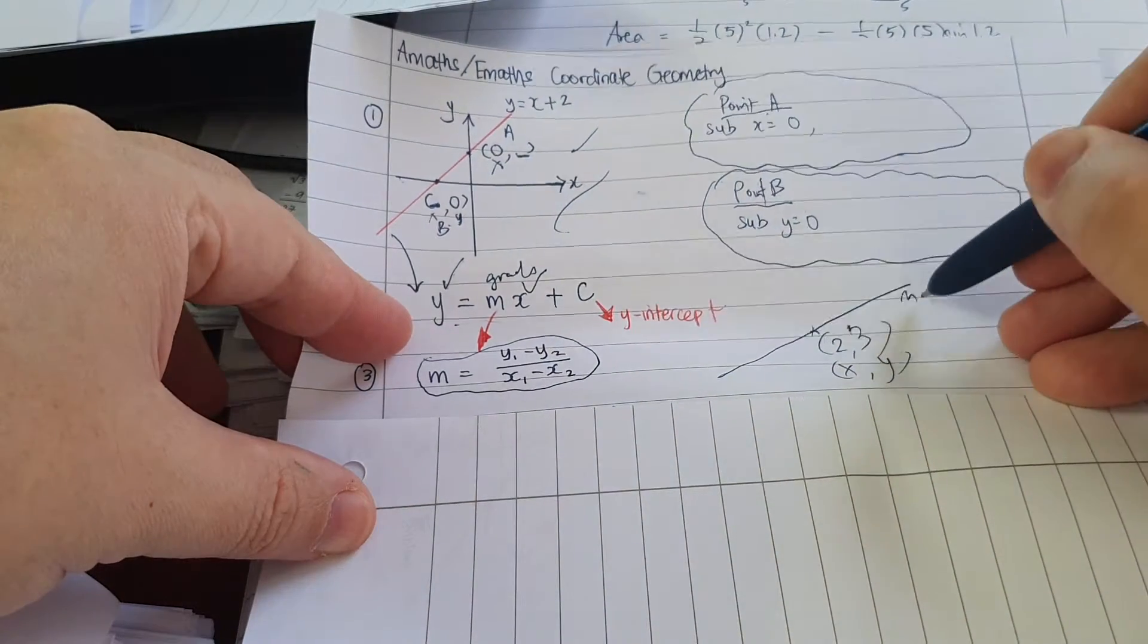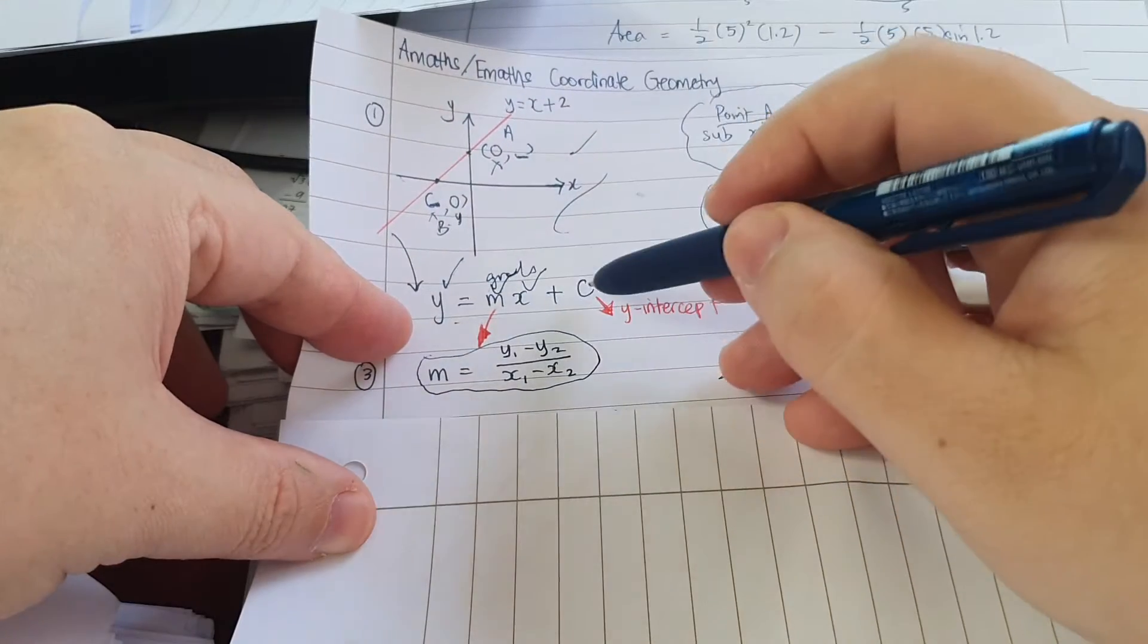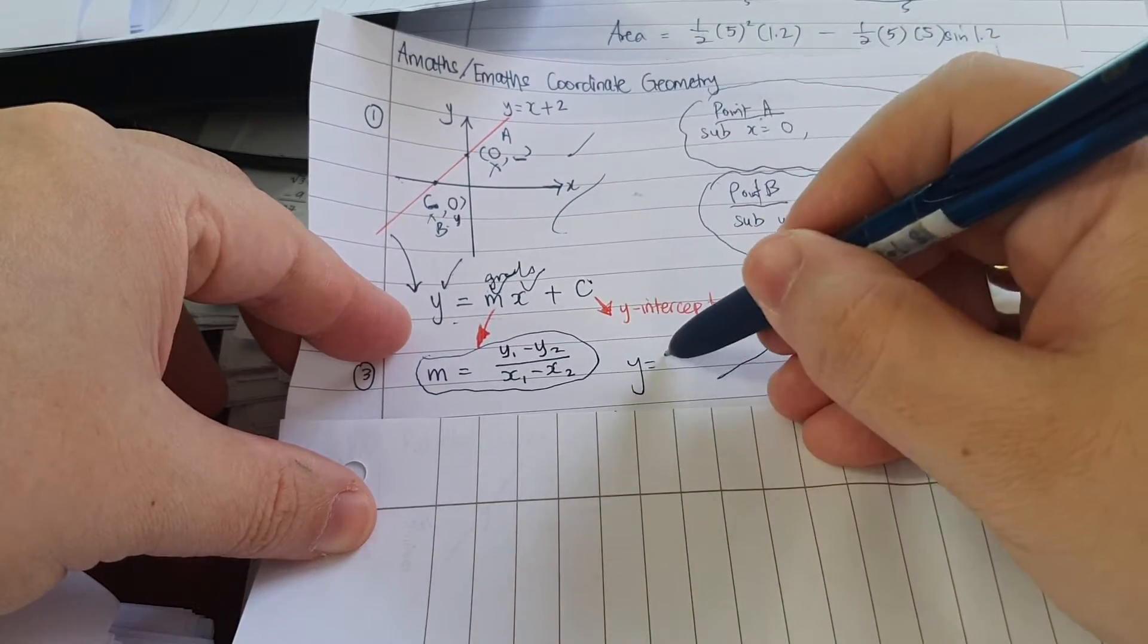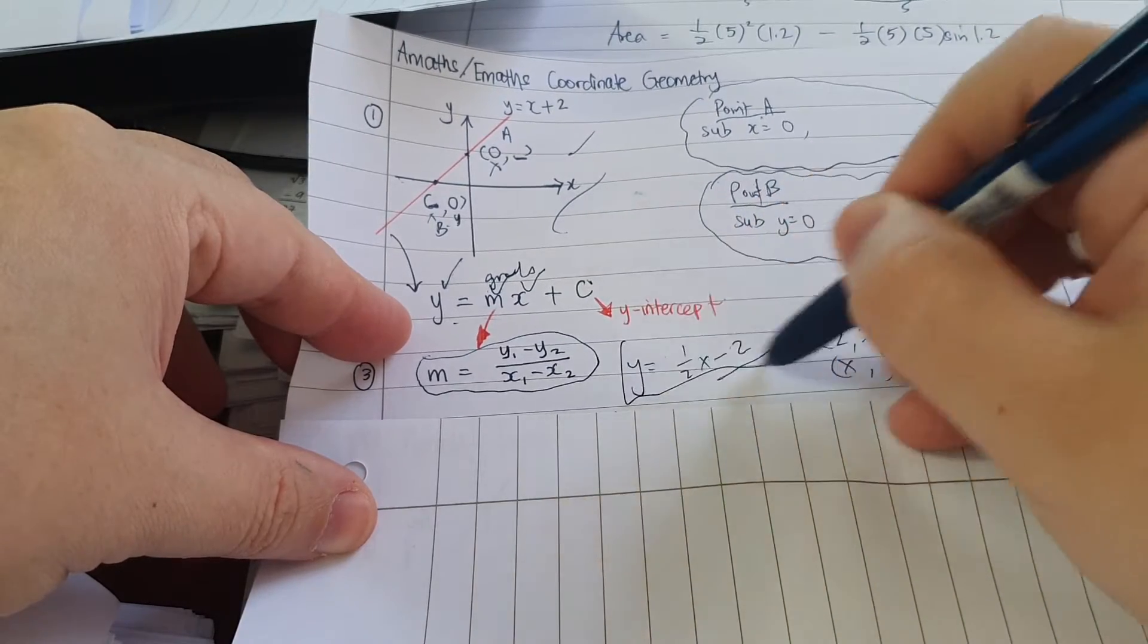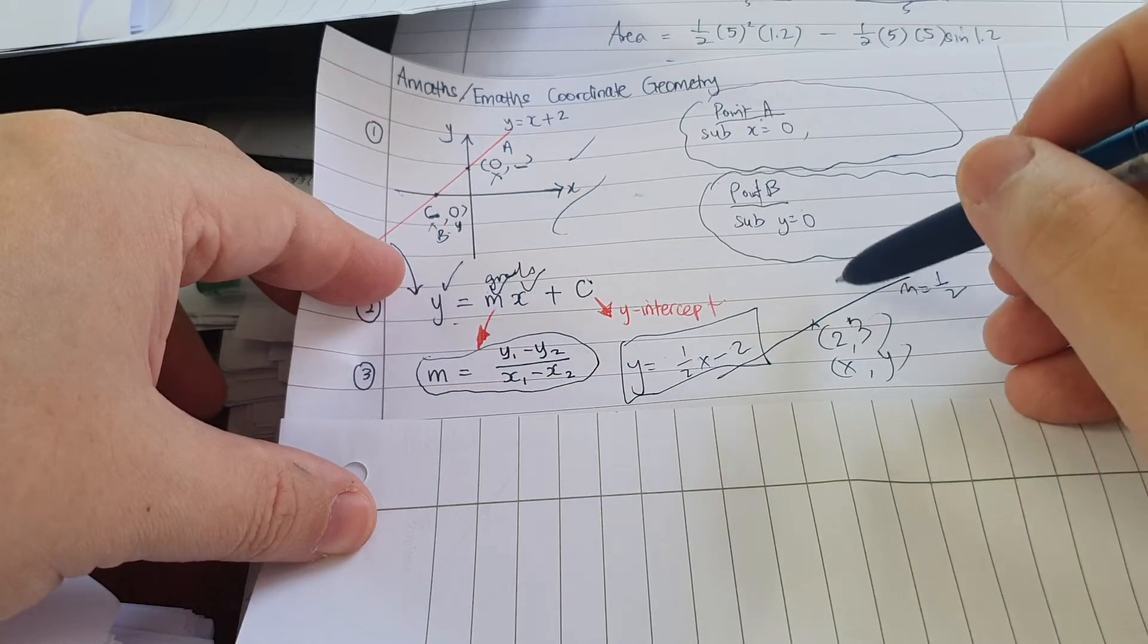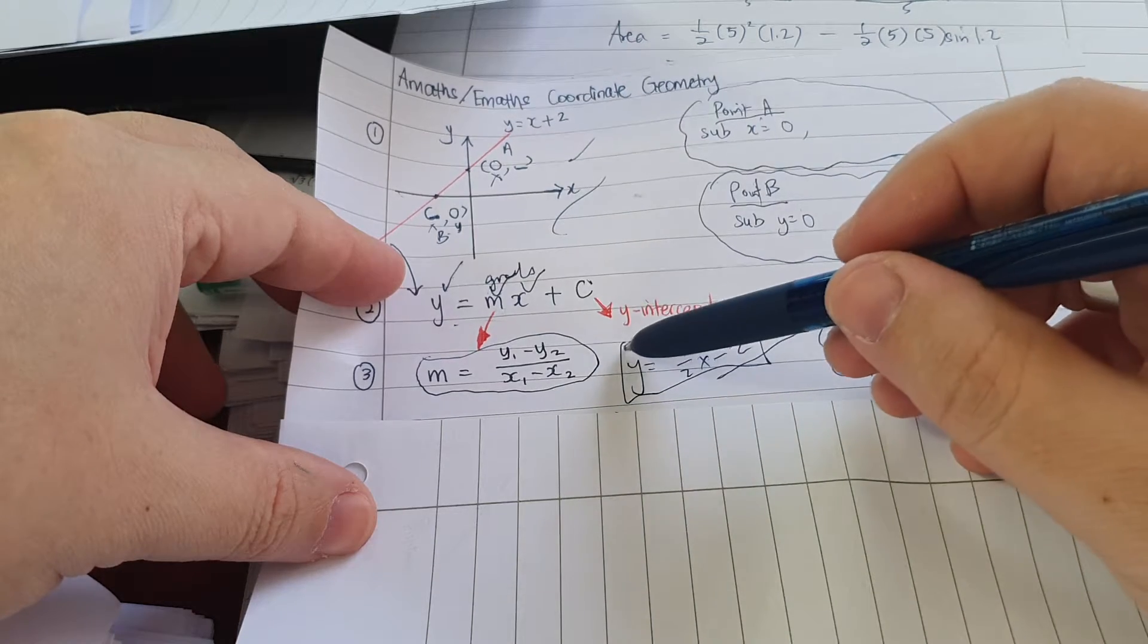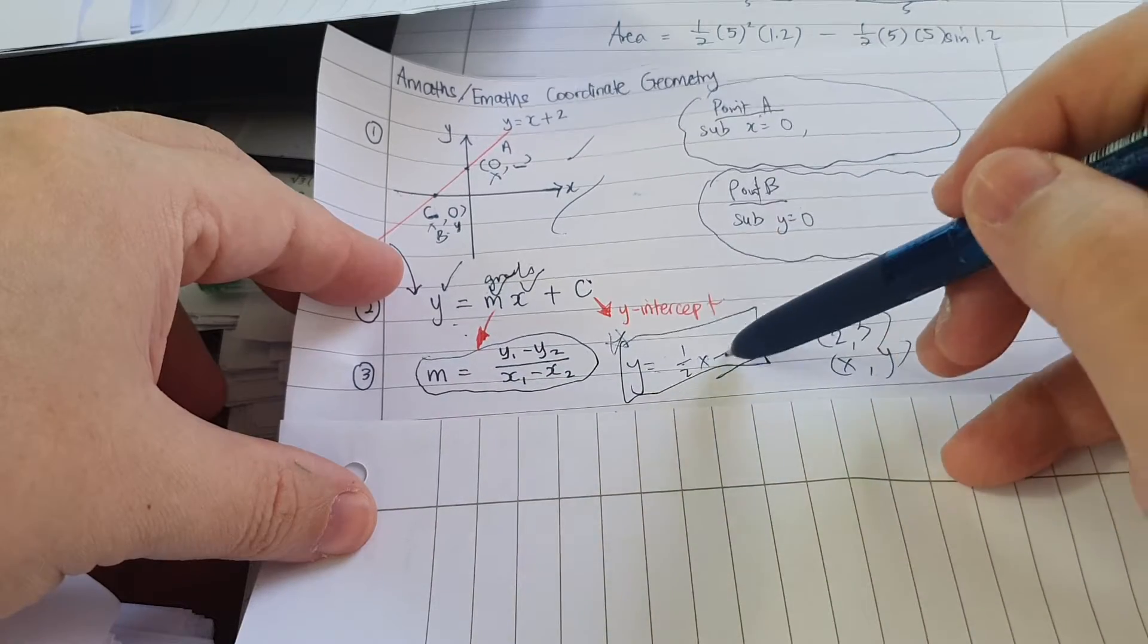Because the whole idea is you want to find C. You also need to know the gradient, let's say gradient is half, you throw in here, then you'll be able to find C. Then you must write the equation, let's say Y equals half X minus two. This is your equation of the straight line. You cannot just say find C and move on to the next question. This is the equation of a straight line, Y equals MX plus C.